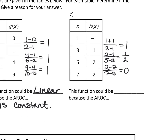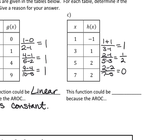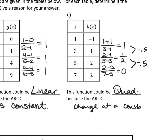For the next one, would we call this quadratic, linear, or neither? Quadratic. How are these rates of change changing? They're changing by subtracting 0.5 every time. Because the average rates of change change at a constant rate, it's quadratic — negative one half or negative 0.5. If those numbers didn't have a pattern you could add or subtract, you would say neither, because the average rates of change do not change at a constant rate.